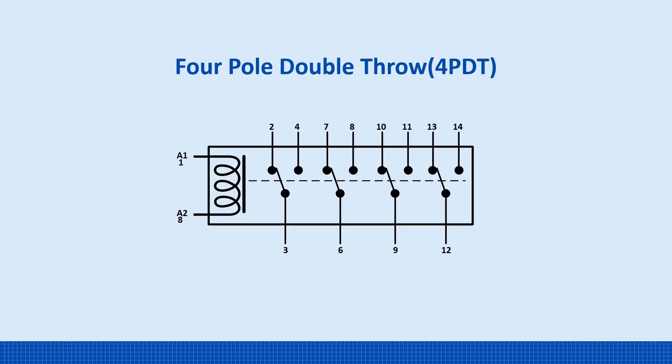In the same way, here I'm showing you a four PDT relay. That means it has four poles, so it can control four separate circuits, and each pole can switch between two contacts. That's why it's called a four-pole double-throw relay, or four PDT.